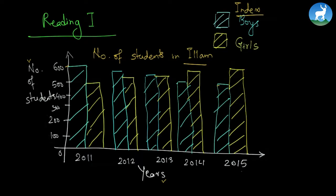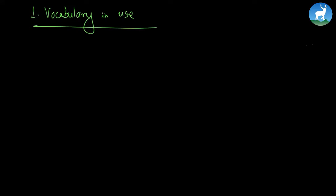As we can see, there are 600 boys in the beginning of the year while 500 girls in 2011, and this data is exactly reversed — we have 500 boys and 600 girls in 2015.